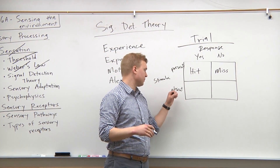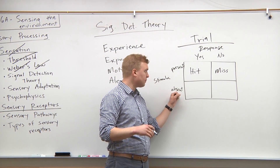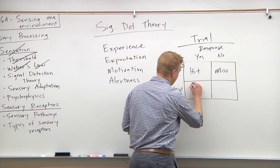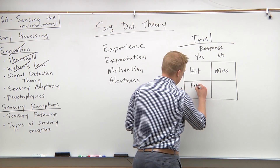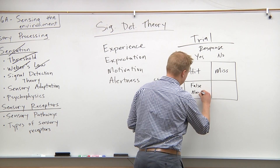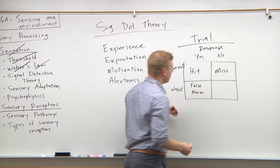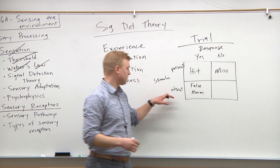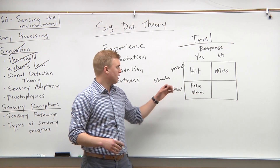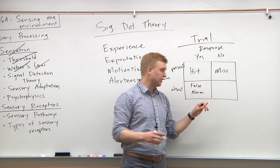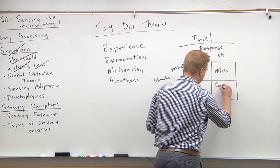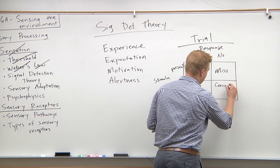If the stimulus is absent but you still said yes, that's called a false alarm. And finally, if you said no and the stimulus was indeed absent, then that's called a correct rejection.